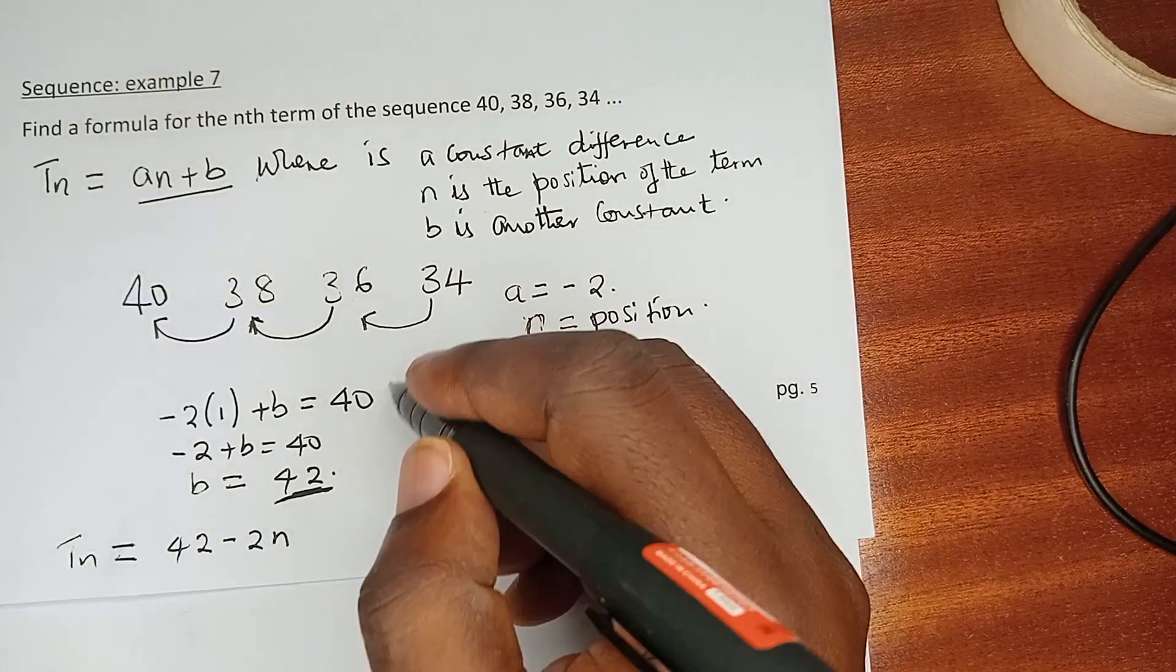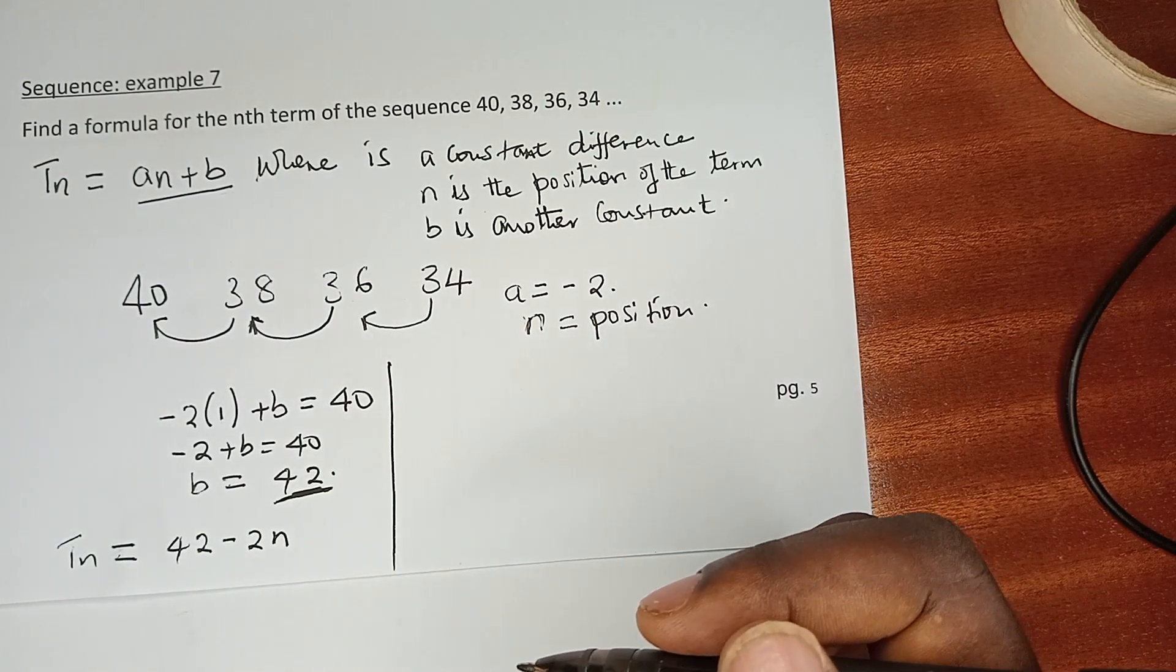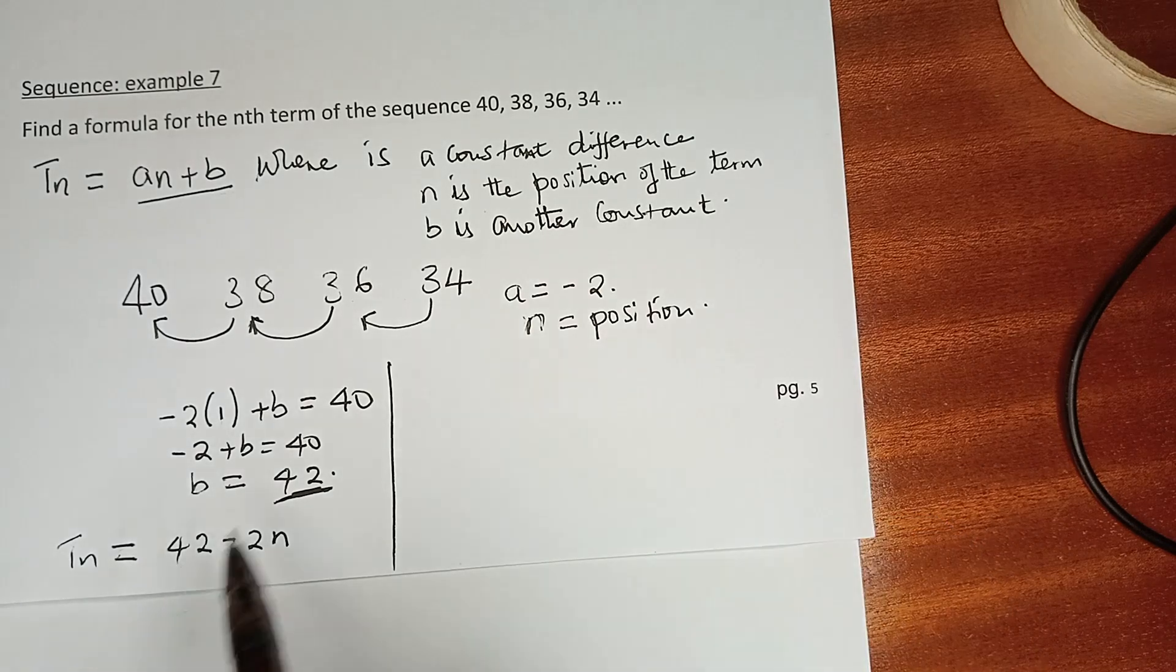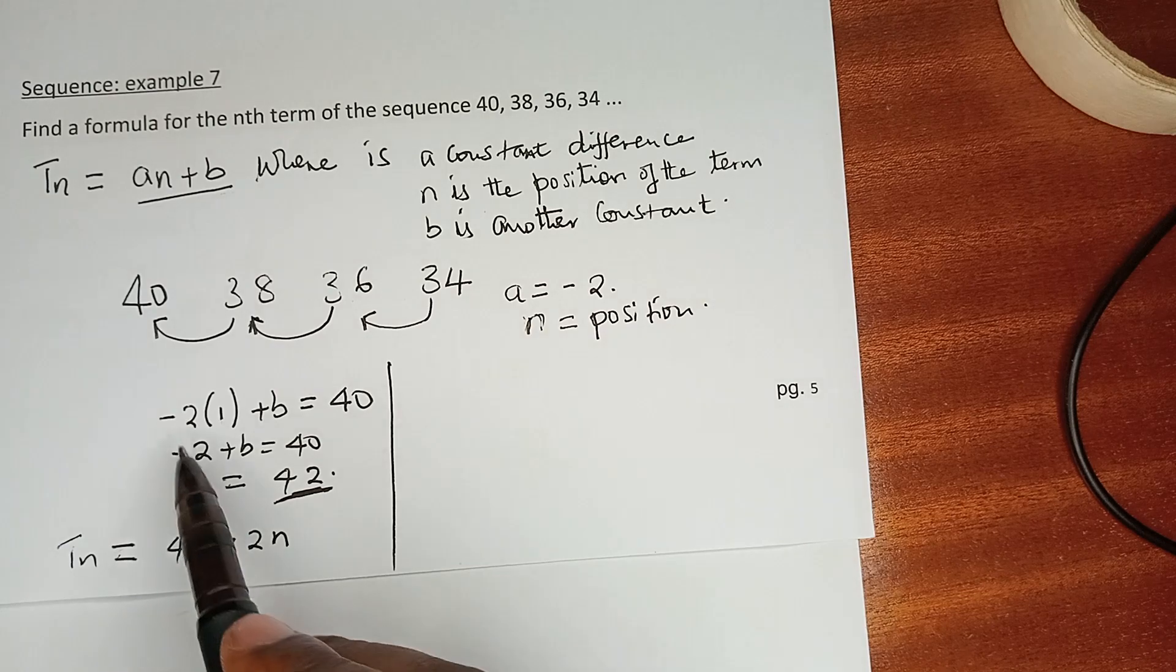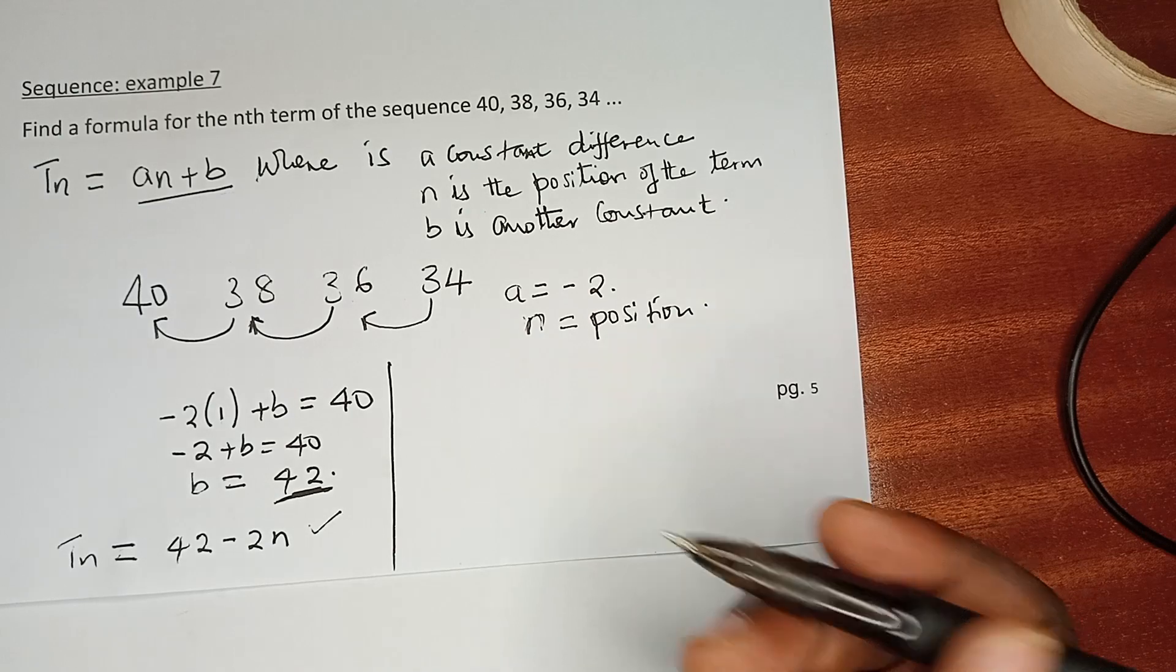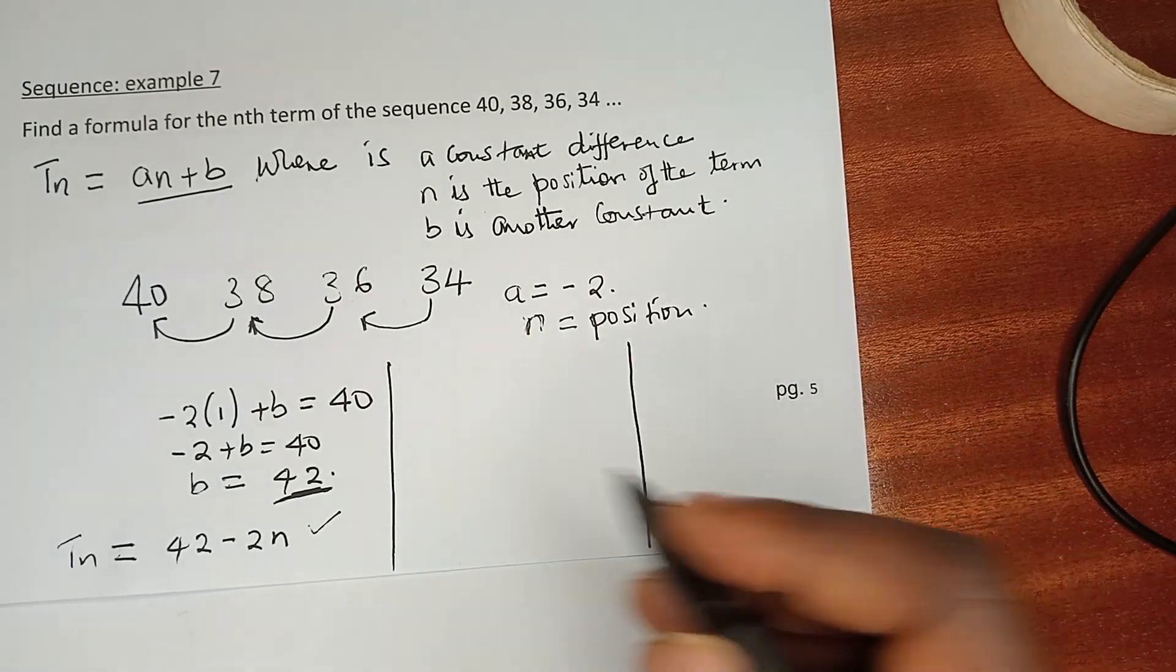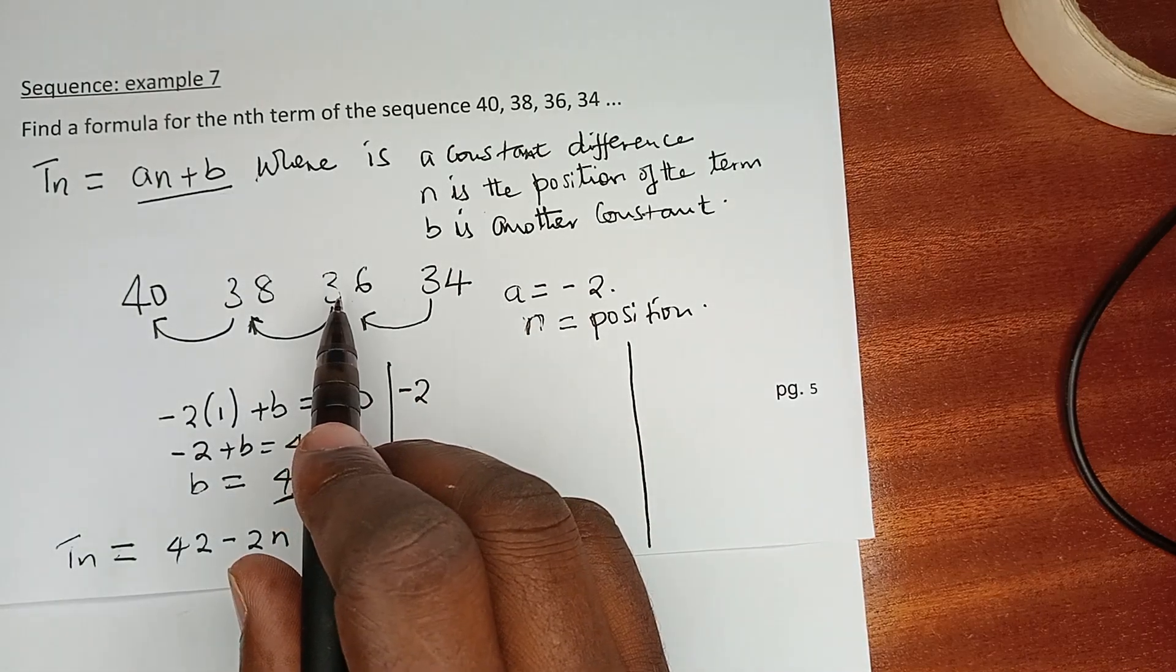Or rather, you can even write it in terms of -2n + 42, but you can get 42 if you have started with b, which is 42 - 2n. That is the formula. Alternatively, we can just use another term, not just 40, and we can have -2. Let's use position 3 here,